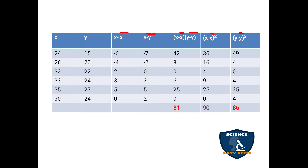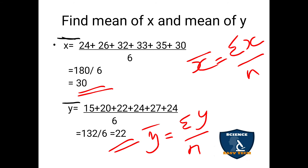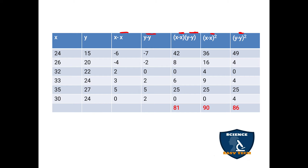Moving on to y − ȳ. ȳ value is 22. Each y value subtract 22: 15 − 22 = −7; 20 − 22 = −2; 22 − 22 = 0; 24 − 22 = 2; 27 − 22 = 5; 24 − 22 = 2. Now we have calculated x − x̄ and y − ȳ values.